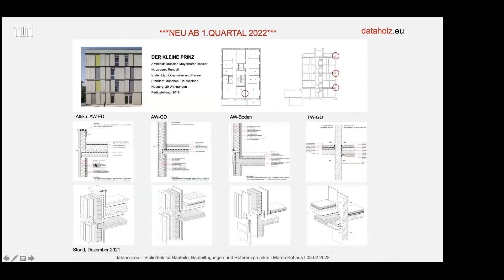Es ist schon alles bearbeitet, es muss noch online gestellt werden. Wir mussten ganz schön lange nerven – das ging dann über vier Monate –, immer wieder Feedback einholen, wie die Details wirklich ausschauen: das Attica-Detail, die Außenwand mit der Geschossdecke, der Sockel und der Trennwand-Geschossdeckenstoß. Wir hoffen, dass durch diese Online-Bibliothek die holzbaugerechte Planung einfach erleichtert wird, und dass die Akzeptanz bei Bauherren, Investoren und Behörden steigt, sodass der Holzbau wettbewerbsfähig gegenüber anderen Baustoffen wird.